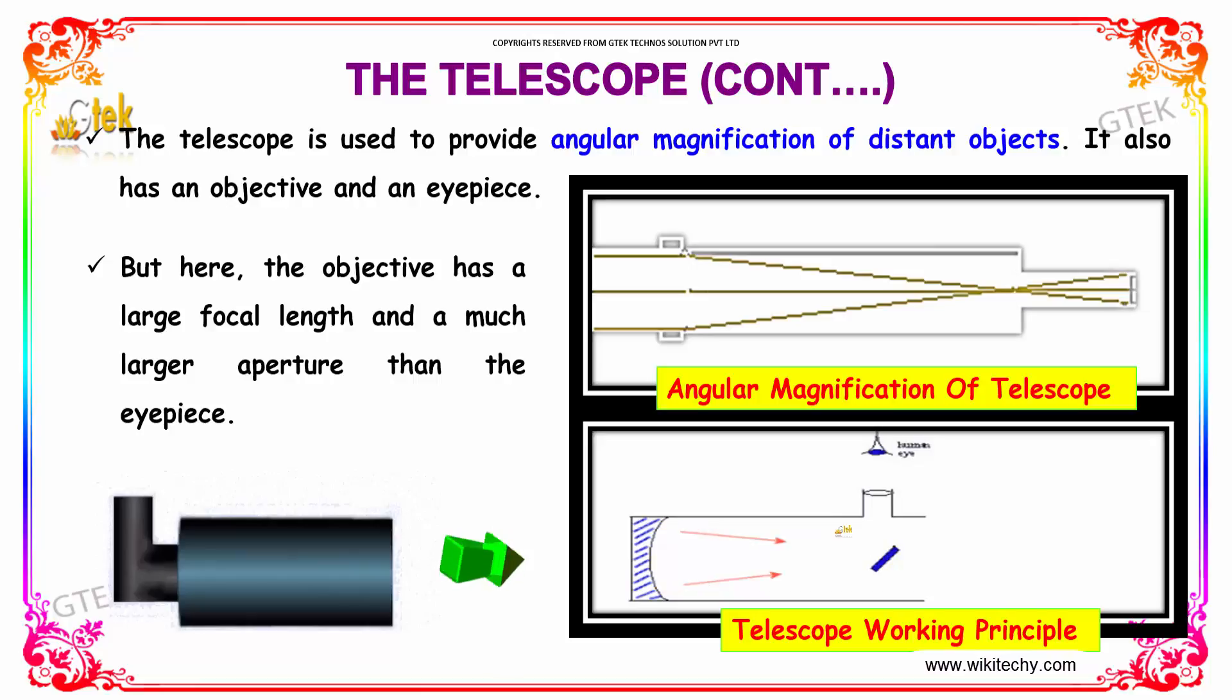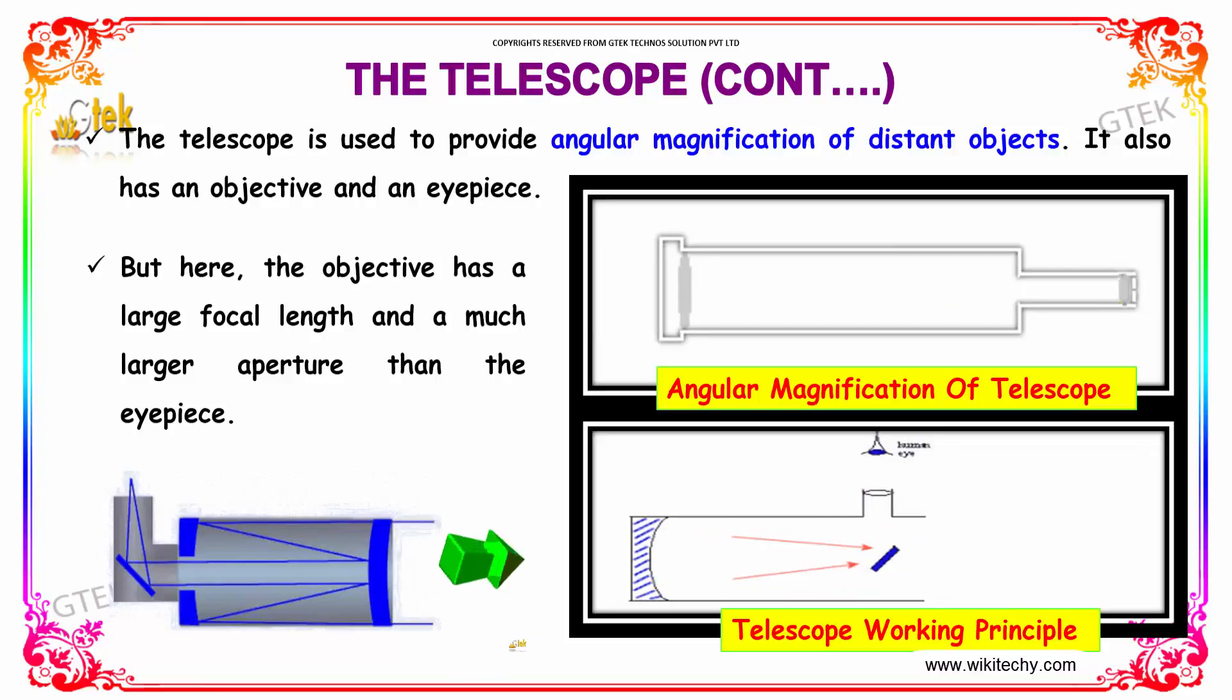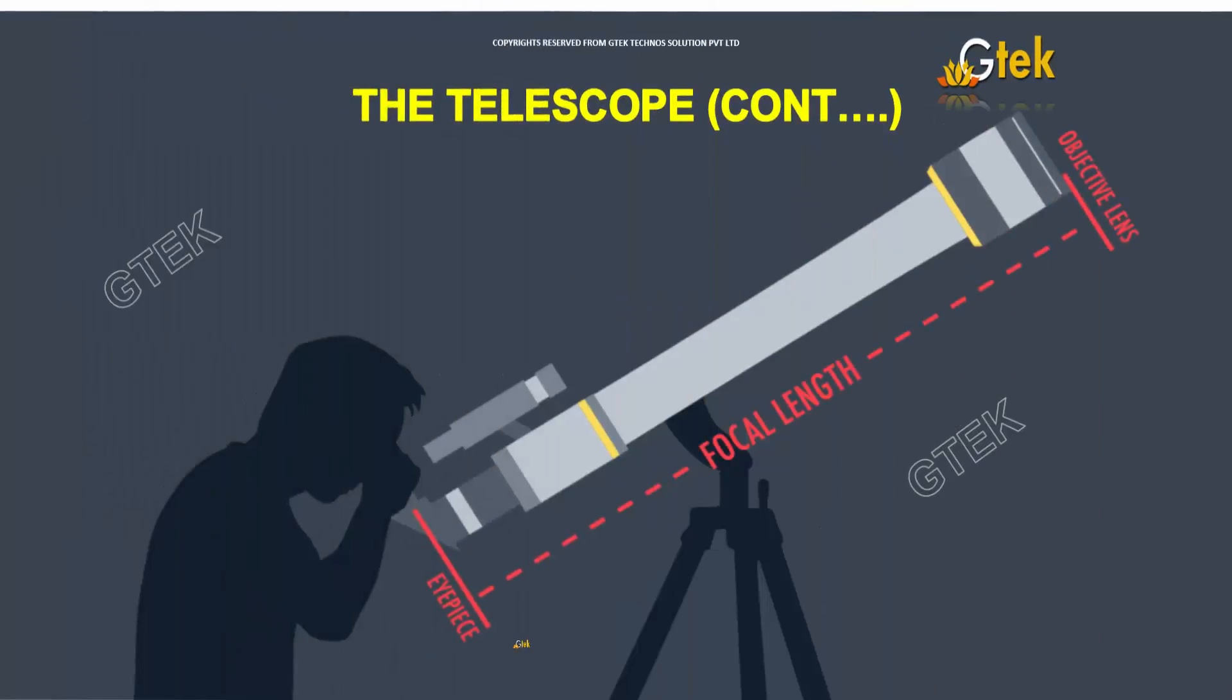The objective has a large focal length and a much larger aperture than the eyepiece. If you see here, this one is the eyepiece where that person can view it, and this one is considered to be the focal length.